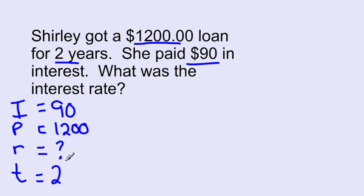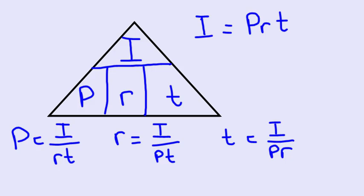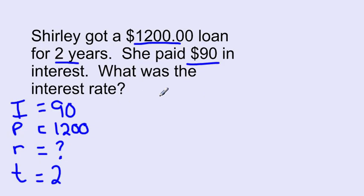Since we want to solve for R, we're going to go back and use our formula. R equals I divided by PT. So R equals I divided by PT.